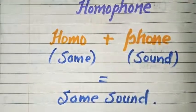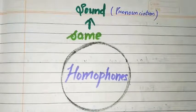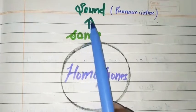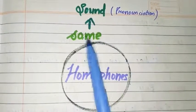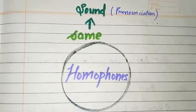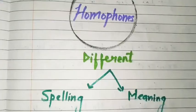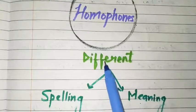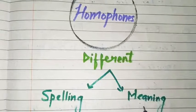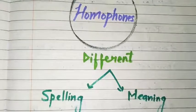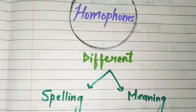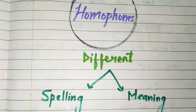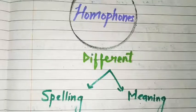Dear students, aise words jinke sound pronunciation same hote hai, unhe hum homophones kehte hai. But they have different spelling and meaning. Unka pronunciation — matlab sound — same hota hai bolne ya sunne mein, jo words same lagte hai. But unki spelling aur unka meaning different hota hai. Unhe hum homophones kehte hai.